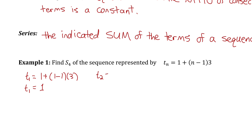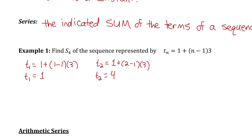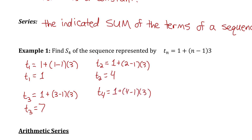For the second term, I'll sub n=2, which gives me 1 plus 1 times 3, which is 4. For term 3, subbing in 3 for n: 1 plus 2 times 3 is 7. And the fourth term, subbing in 4 for n, gives me 10. So the four terms are 1, 4, 7, 10.